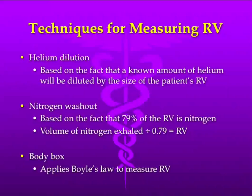First of all, there's helium dilution. Basically, you start with a known helium concentration, and the patient breathes until you reach equilibrium. Based on how it's diluted — and there's a formula we'll talk about in a minute, which you do not have to memorize — and based on what percentage reaches equilibrium, you can determine approximately what your residual volume is.